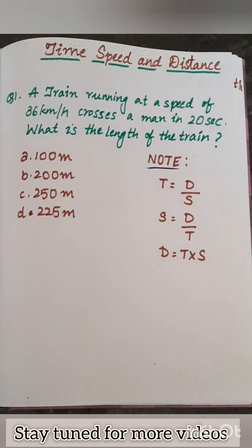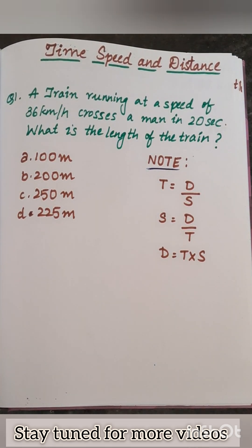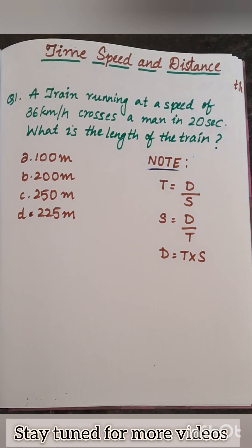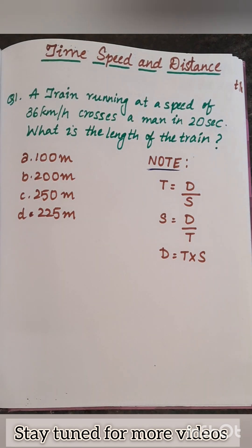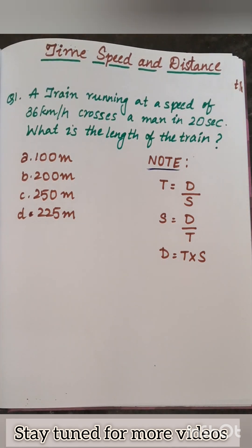Hey guys, welcome back to my YouTube channel. In this video, let us see a question from time, speed, and distance. A train running at a speed of 36 kilometers per hour crosses a man in 20 seconds. What is the length of the train?